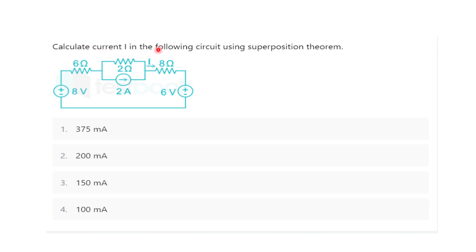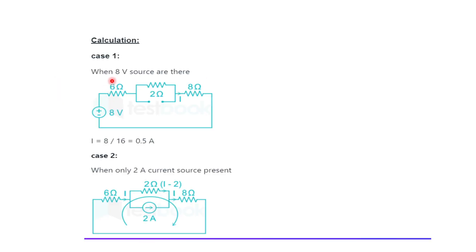Now, calculate current I in the following circuit using the superposition theorem. We have to calculate the current flowing through this branch. There are three sources: one 8V voltage source, another voltage source, and a 2A current source. In Case 1, considering the 8V source alone: the 2A current source is open circuited and the other voltage source is short circuited. With 6Ω, 2Ω, and 8Ω resistors in series, current I₁ = 8/16 = 0.5 A.